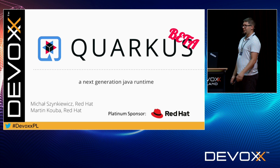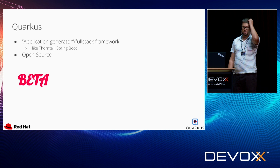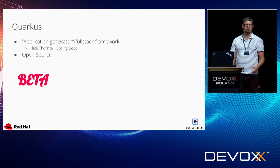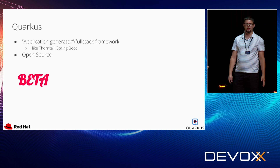Quarkus is a new project from Red Hat, and it's an application generator or a full stack framework. You may think of it like something like ThorntTail or Spring Boot, or maybe even an alternative to a fully blown app server like WildFly. As everything from Red Hat, it's 100% open source, but it's still in beta.